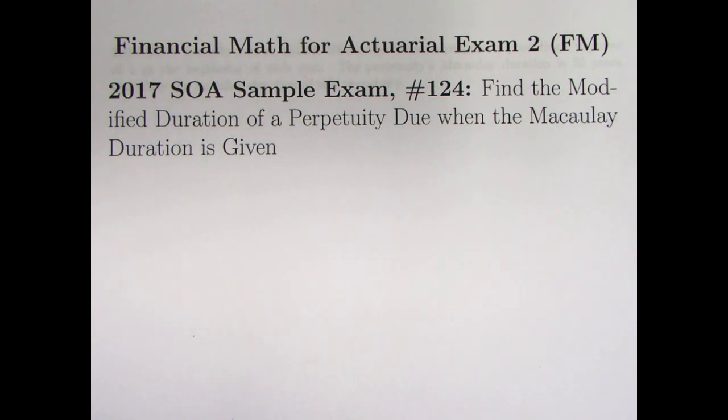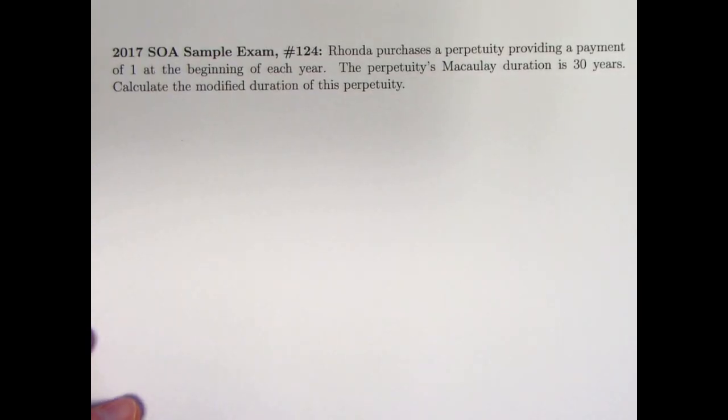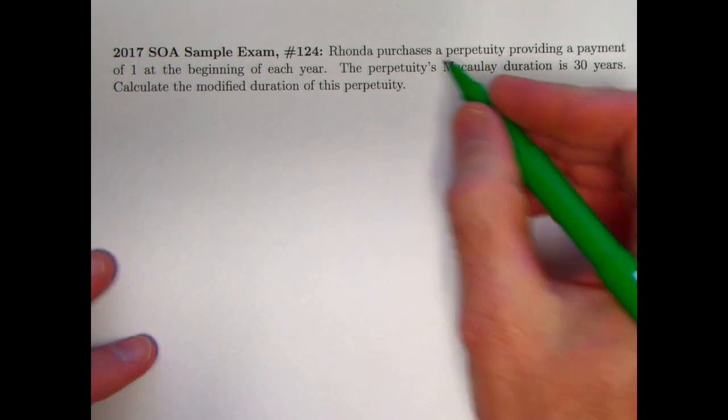And I did find one. It's problem number 124. The goal is to find the modified duration of a perpetuity due when the Macaulay duration is given. Pretty short problem statement here, and the initial feeling you might have is because it's so short we're not given much information. It might be difficult to solve, but it's not too hard to solve.